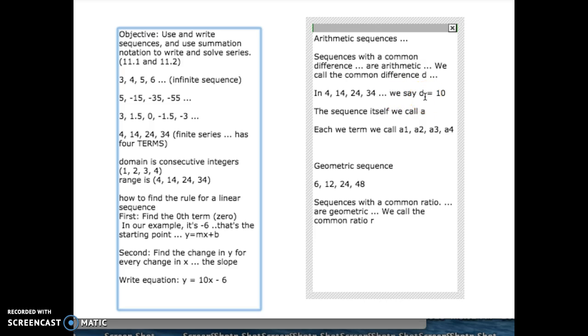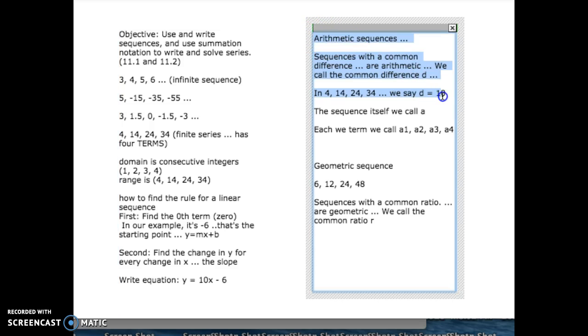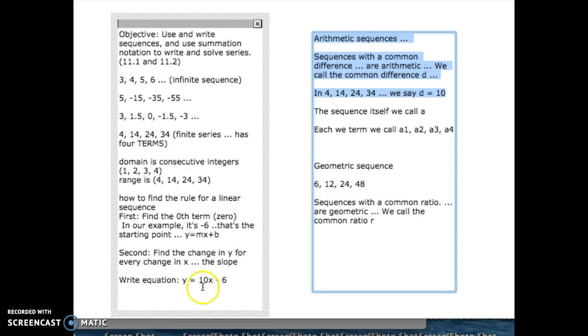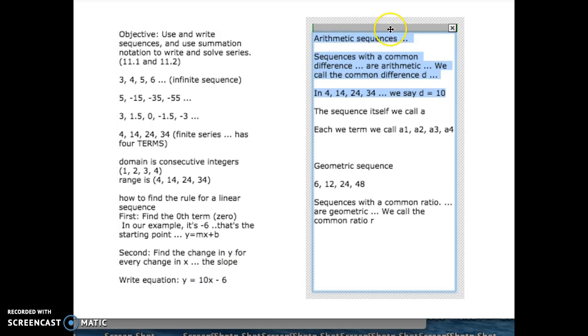And that's just a couple notation ideas you need to get used to. Another one, so D is the common difference. That only arithmetic sequences have a common difference. So, linear equations, linear rules, lead to arithmetic sequences with a common difference.